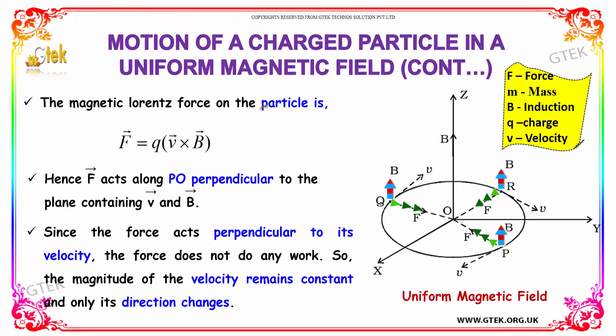The magnetic Lorentz force on the particle is F vector equals Q into V vector into B vector. Hence F vector acts along PO which is perpendicular to the plane containing V vector and B vector.